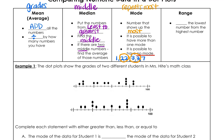The last vocabulary term is range. Range is your big number minus your small number — your maximum take away your minimum. So we subtract the lowest number from the highest number.